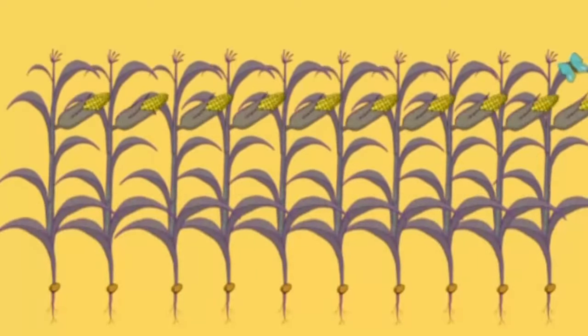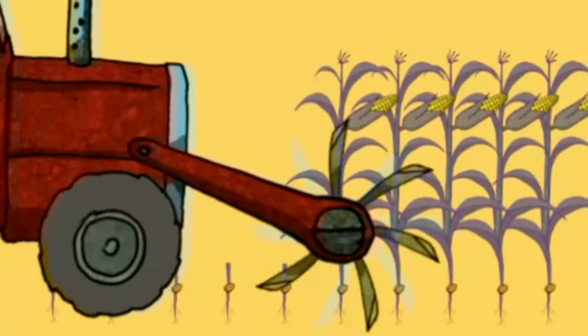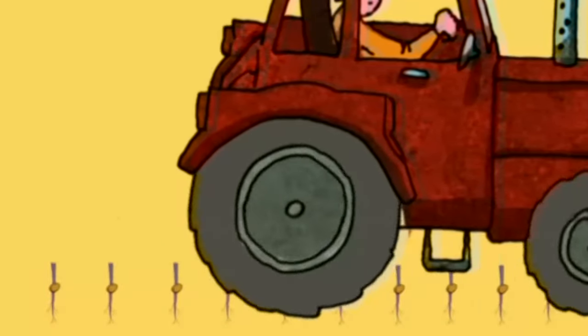Quand les larves de pyrales ont été tuées par ce maïs insecticide, la protéine Bt continue d'être fabriquée. En réalité, cette protéine Bt n'est pas toxique que pour la pyrale, mais pour tous les autres lépidoptères qui ne sont pas des ravageurs du maïs.